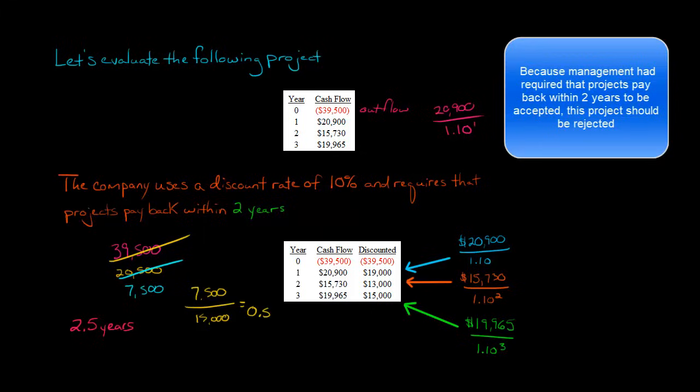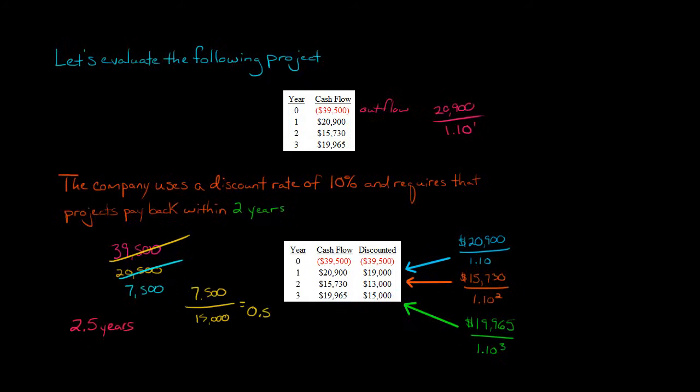Another way of thinking about it is this. After two years time, we received $32,000, and our initial investment was $39,500. So that meant $7,500 still to be repaid. And sometime between year two and year three, we get this $15,000. And we're just going to assume that we got half of it after the first six months of the year.